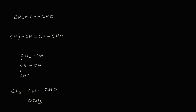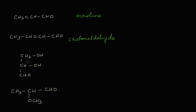The common name for CH₂=CH-CHO is acrolein, also known as vinyl aldehyde. The common name for CH₃-CH=CH-CHO is crotonaldehyde.